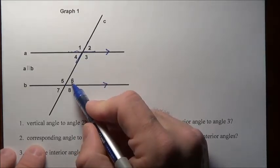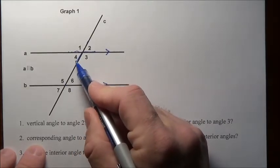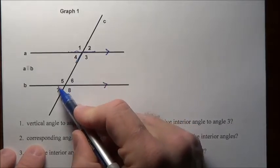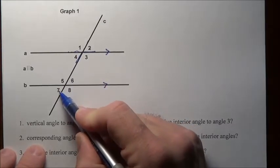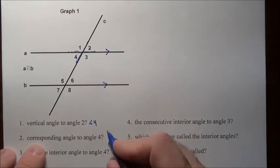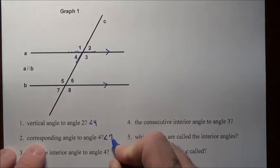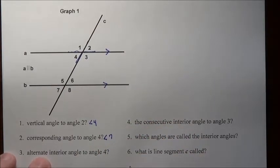Those are corresponding angles. Two and six corresponding angles. Four, which is in the bottom left of this, is going to match the bottom left on this parallel line. So it's going to match seven. Those are corresponding angles. So angle seven is the corresponding angle to angle four.